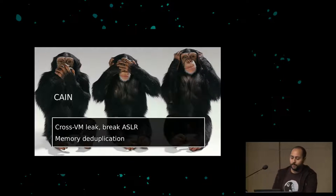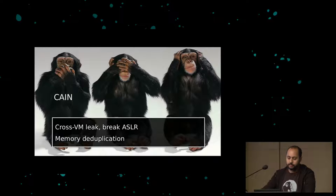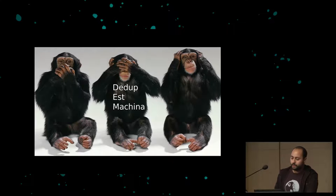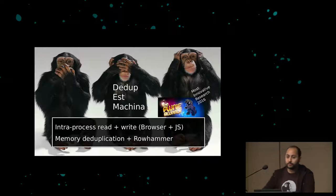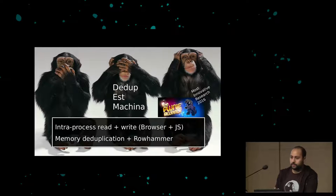First we have CANE — Cross-VM Address-based Layout Introspection — which allows you to leak base addresses or other secrets with higher entropy from other VMs. We applied it to ASLR and it only relies on memory deduplication. Then we have Dedup Est Machina, an attack against a process that got the Pony Award at this year's Black Hat for most innovative research. It relies on memory deduplication and Rowhammer, allowing you to read and write through JavaScript in Edge without any software vulnerability.